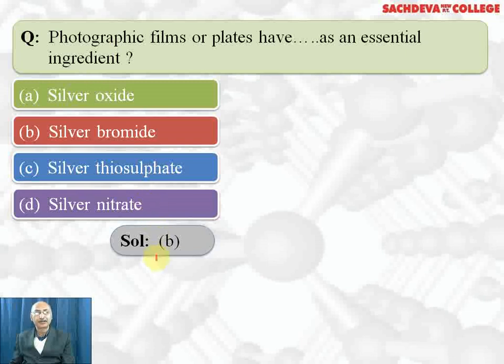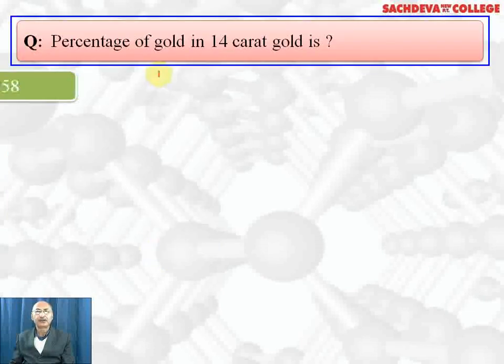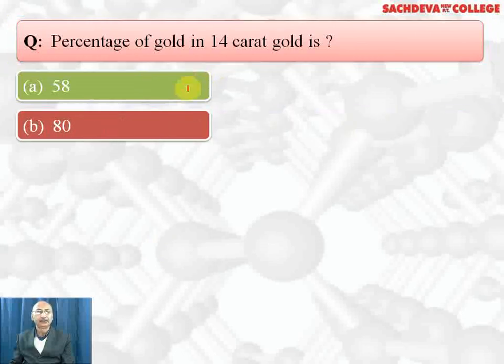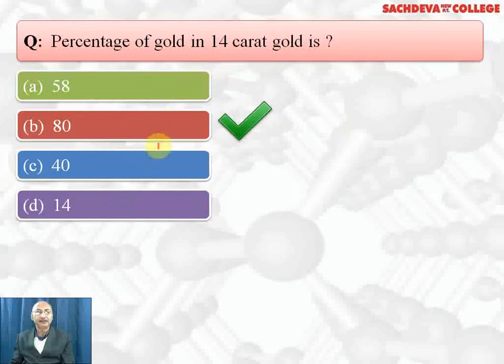Percentage of gold in 14 carat gold is 58, 80, 40, or 14. Correct answer is 58 percent. 24 carat gold is 100% gold, so 14 divided by 24 into 100, it will come out to be around 58 percent. So correct answer is A part.